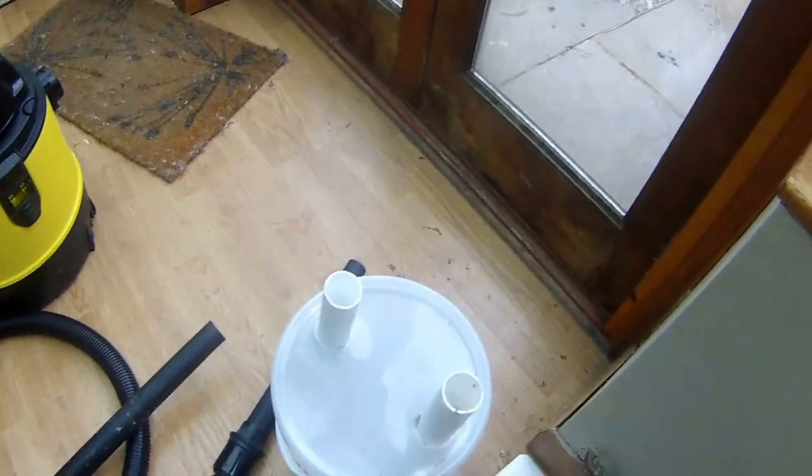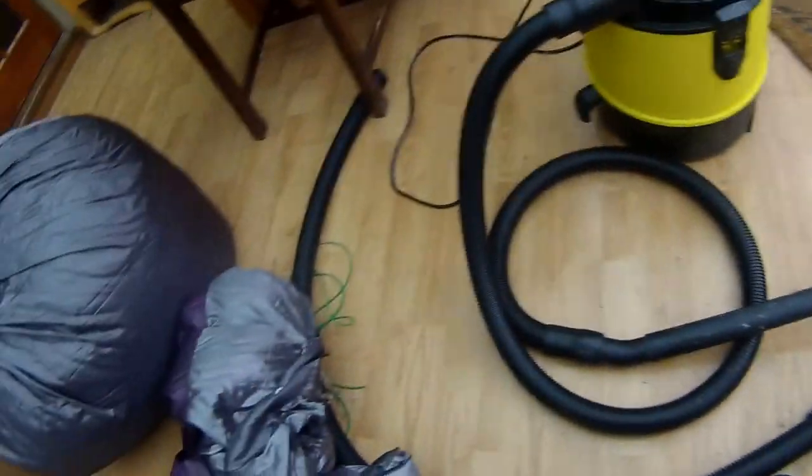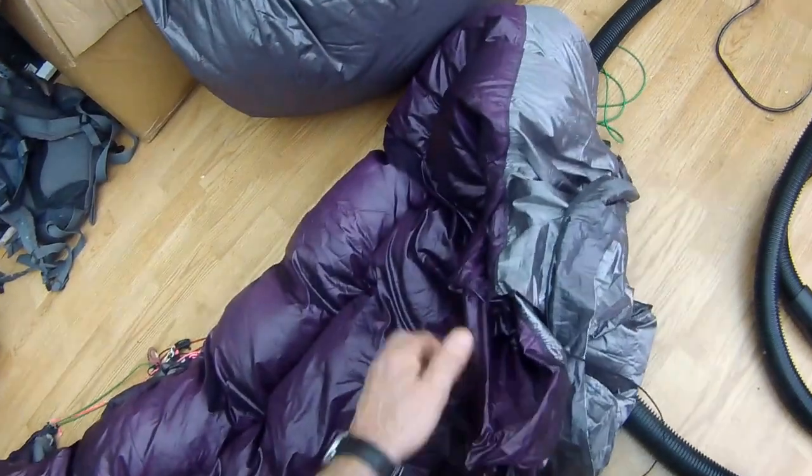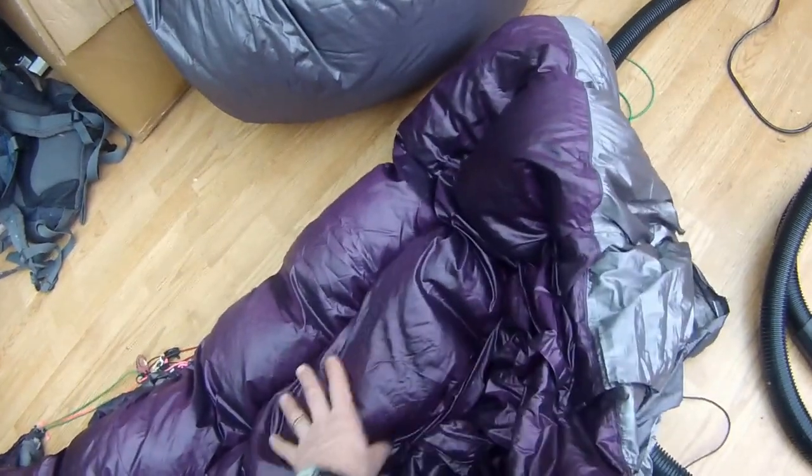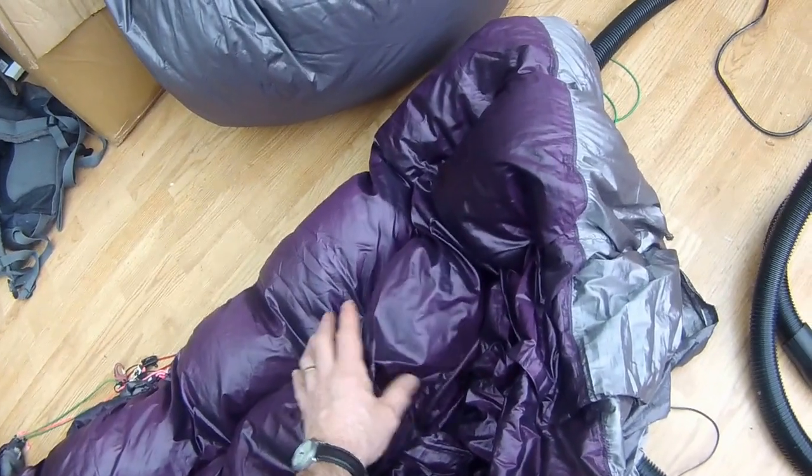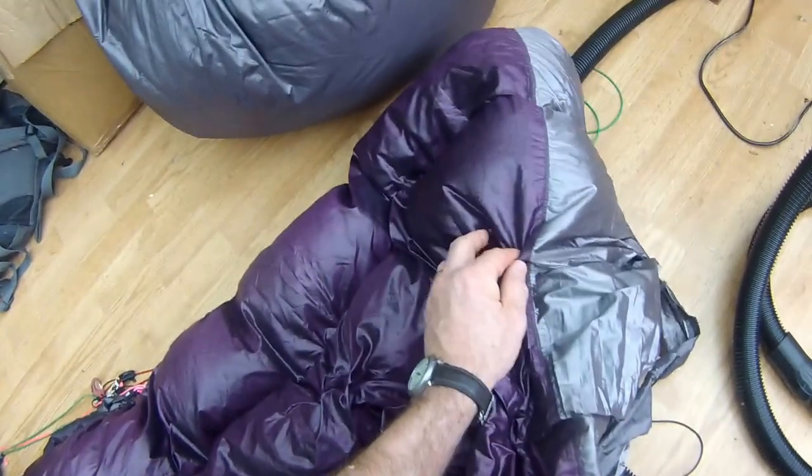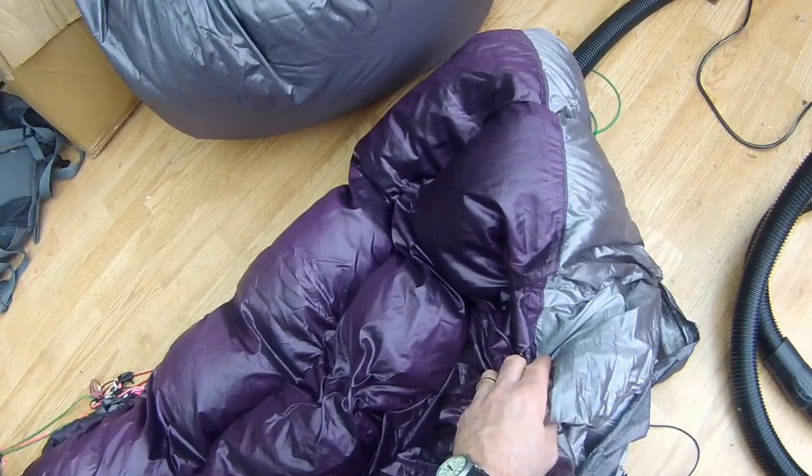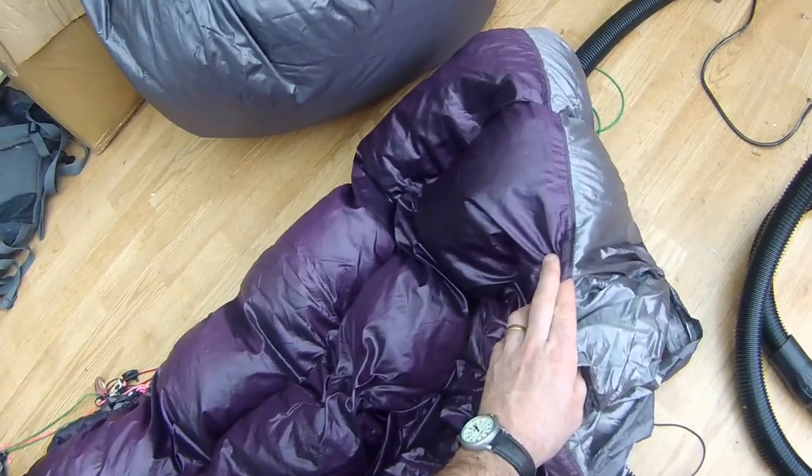Well today I'm going to be harvesting some down from this old quilt here. This is my big purple quilt. It's got 19 ounces of the Costco down in it, which is supposed to be 700 fill.